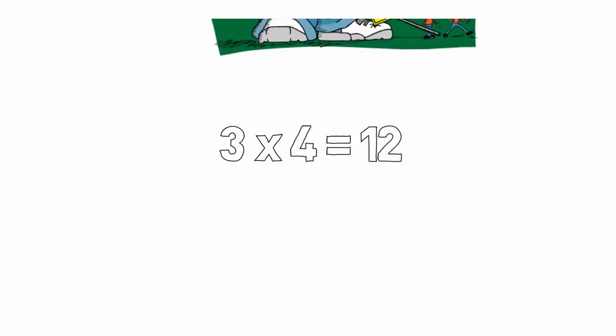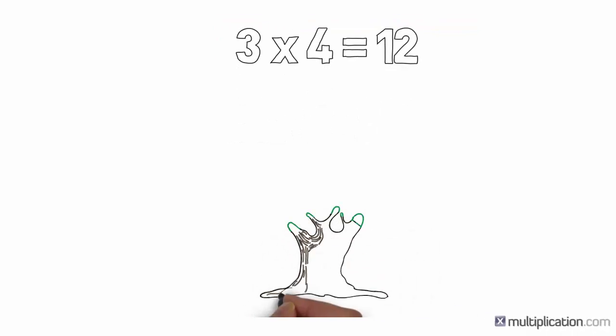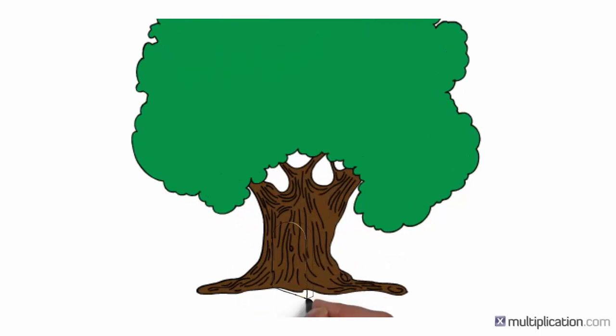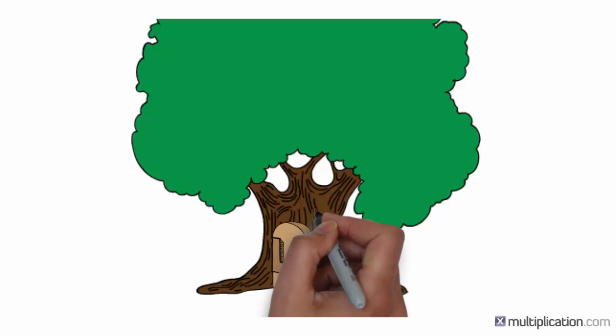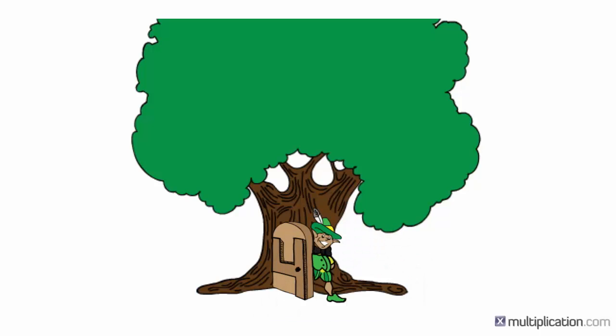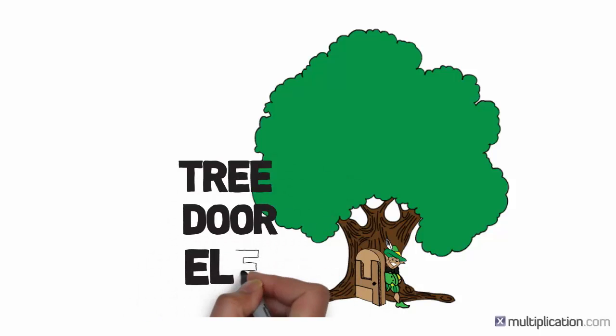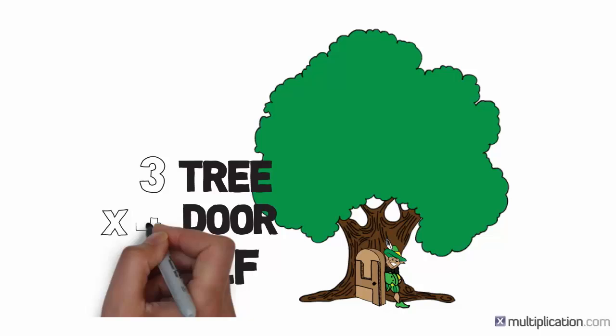Let's say you wanted to remember three times four equals twelve. In our system, we use a picture with a tree for three and a door for four. The picture also has an elf for the answer twelve peeking out from his door in the tree. So the picture of the tree, the door, and the elf reminds you that three times four equals twelve.